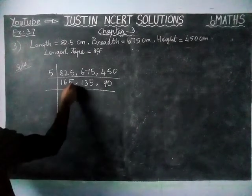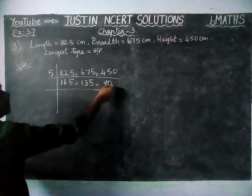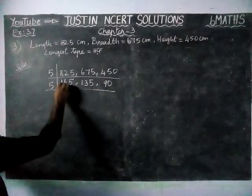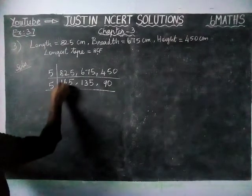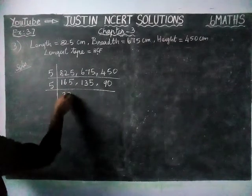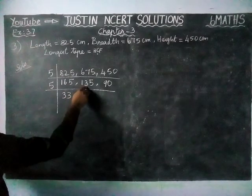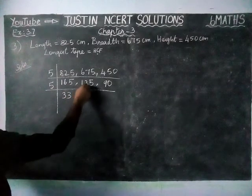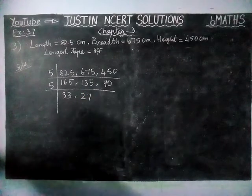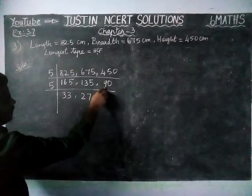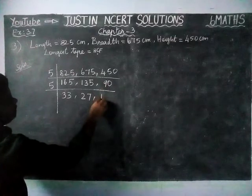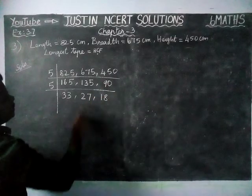Now we are going to divide again. The results still end in 5, 5, 0, so we divide by 5 again. For 165: 3 fives are 15, remaining 1; in 15, 3 fives are 15. For 135: 2 fives are 10, remaining 3; 7 fives are 35. For 90: 1 five in 9, remaining 4; 8 fives are 40.